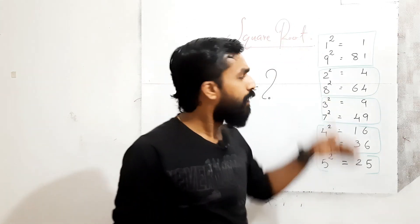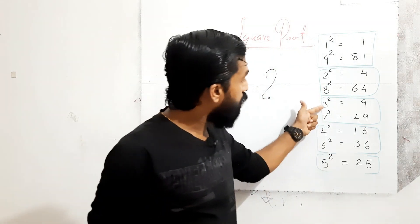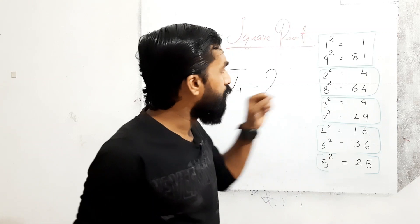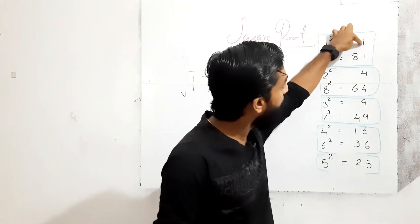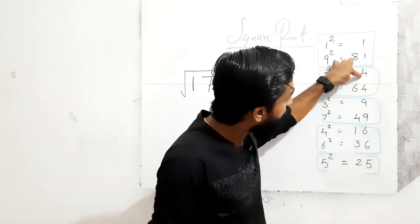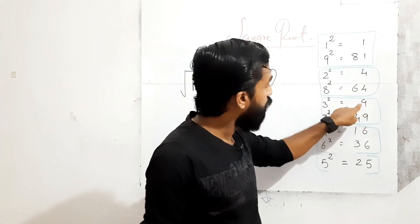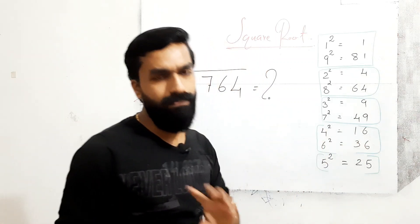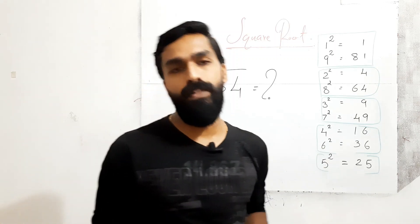Before going to the shortcut method, we have to study some groups. I have written some groups here: 1 square and 9 square — one group; 2 square and 8 square — another group; 3 square and 7 square; 4 square and 6 square; and 5 square. In these groups: 1² = 1 and 9² = 81, both have unit place 1. 2² = 4 and 8² = 64, both have unit place 4. 3² = 9 and 7² = 49, both have unit place 9. 4² = 16 and 6² = 36, both have unit place 6. 5² = 25, just one option, unit place 5.